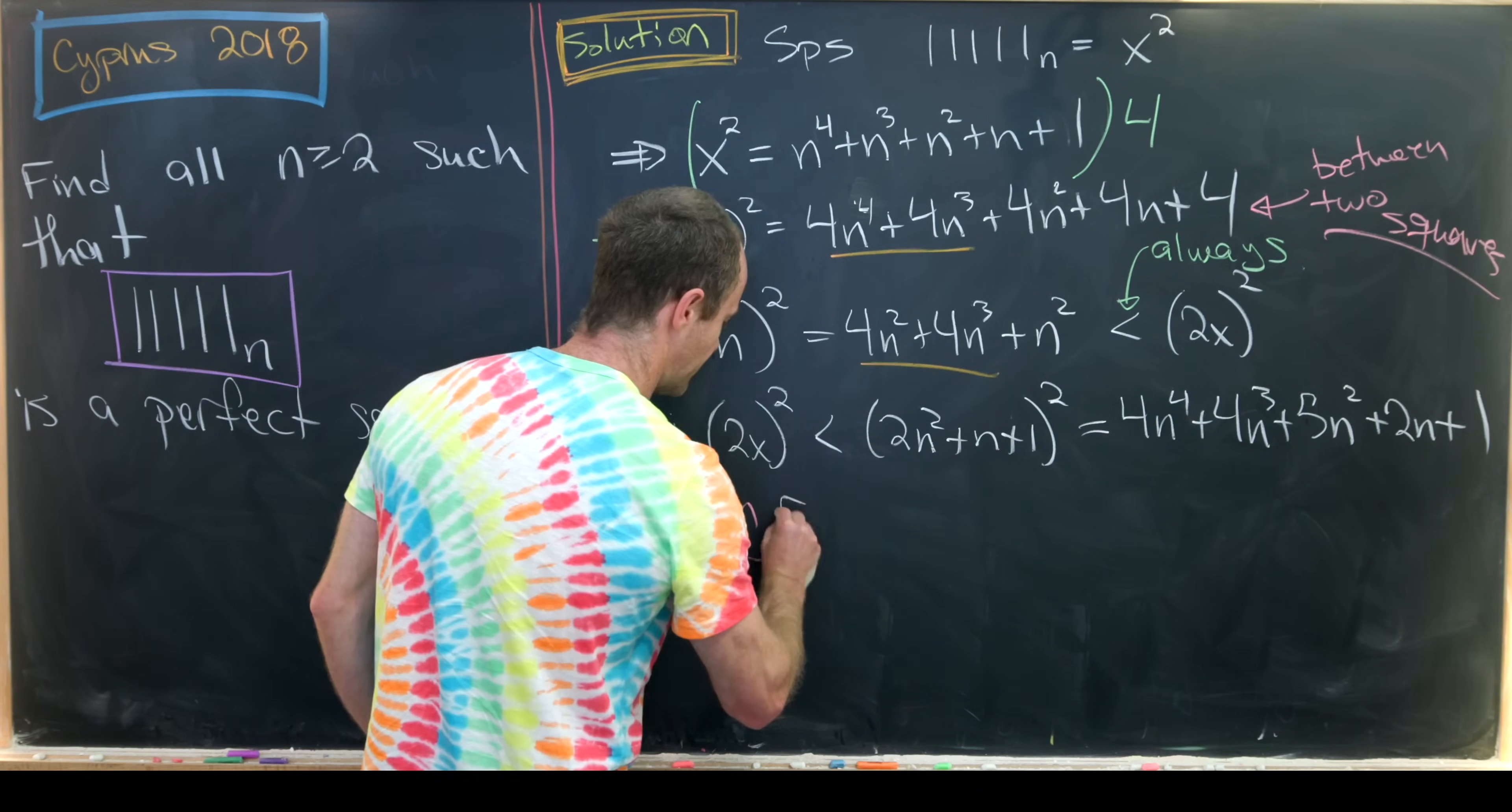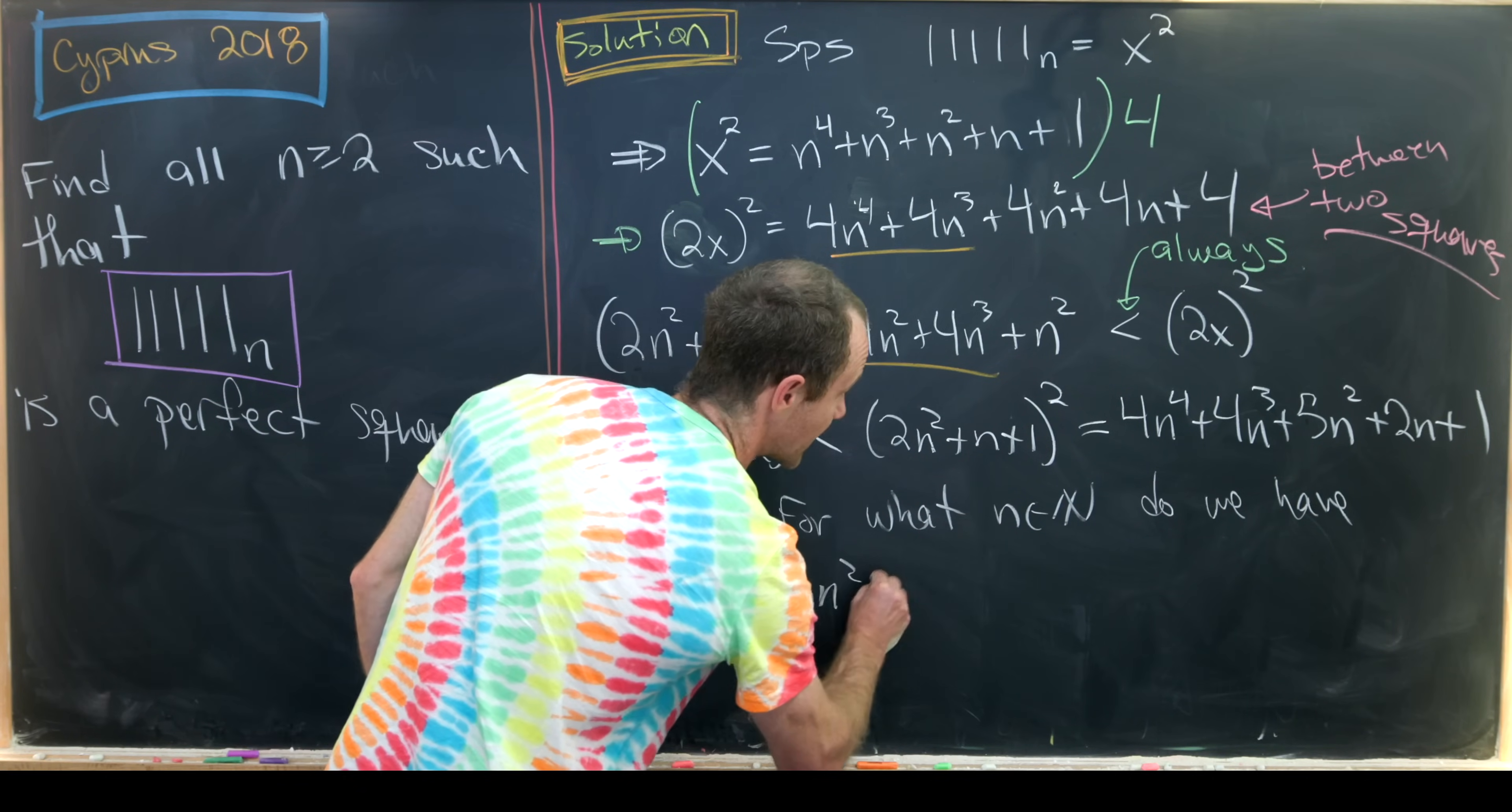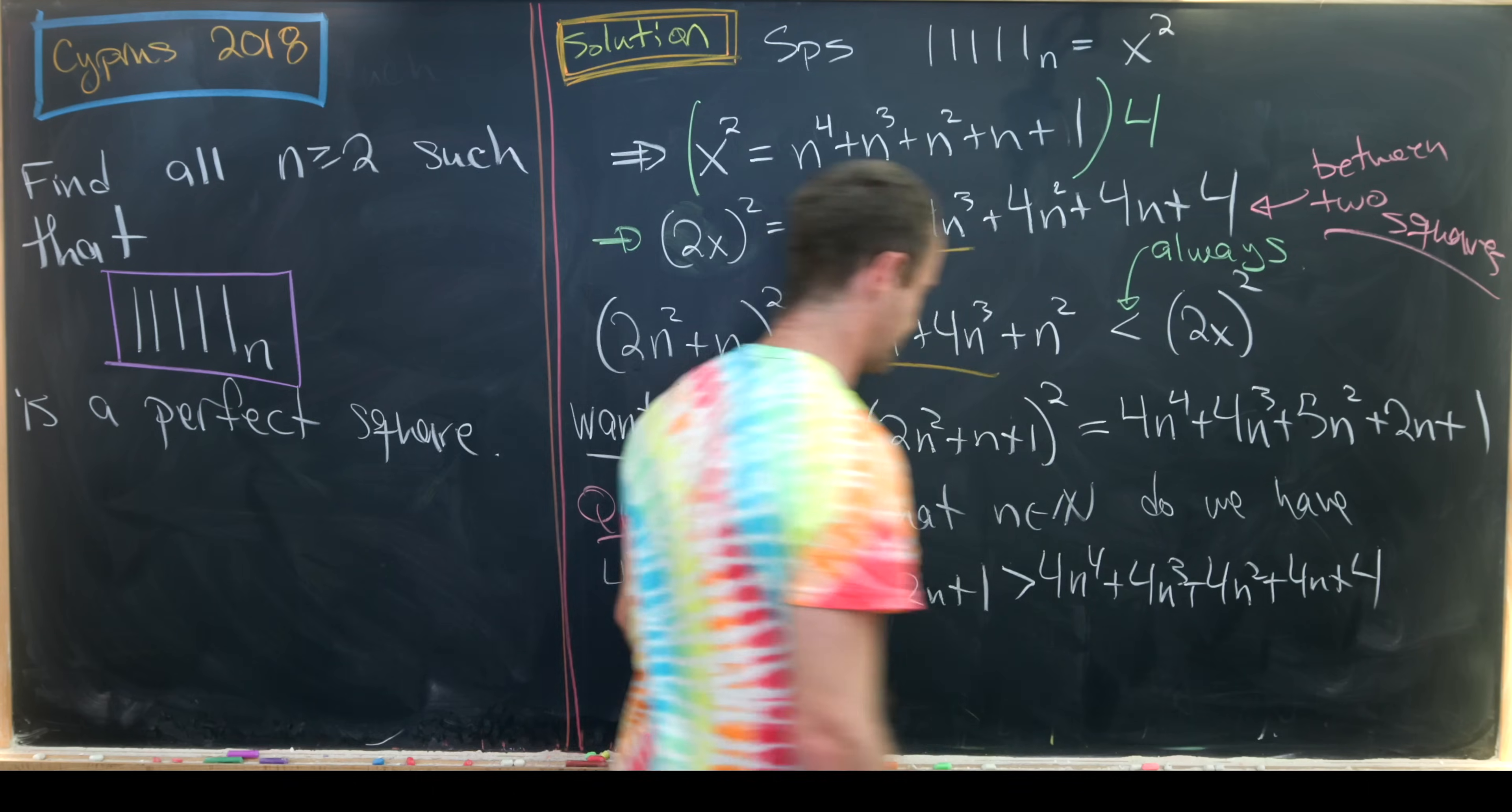And that will be for what n, I'll just say natural numbers, do we have this guy right here, which is 4n to the fourth plus 4n cubed plus 5n squared plus 2n plus 1 is strictly bigger than this 2x quantity squared. But let's recall this 2x quantity squared was this 4n to the fourth plus 4n cubed plus 4n squared plus 4n plus 4. Great.